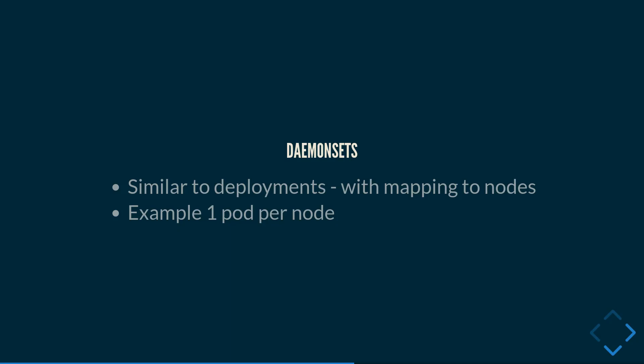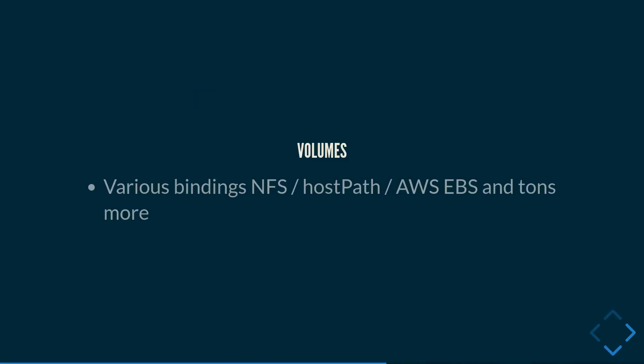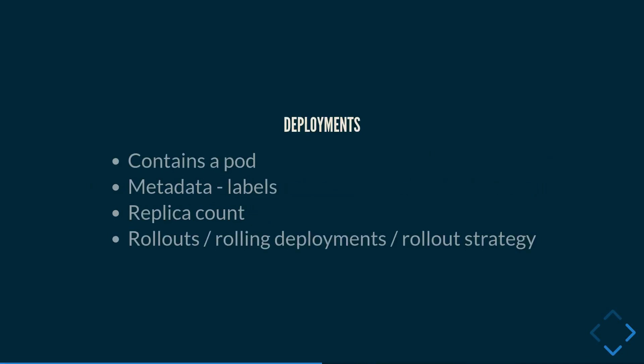With deployments, let's say you have a set of three nodes and you want to deploy a set of three pods. Kubernetes will deploy those three pods across the nodes wherever there is sufficient hardware capacity for them. More than one pod can be scheduled to run on a single node.